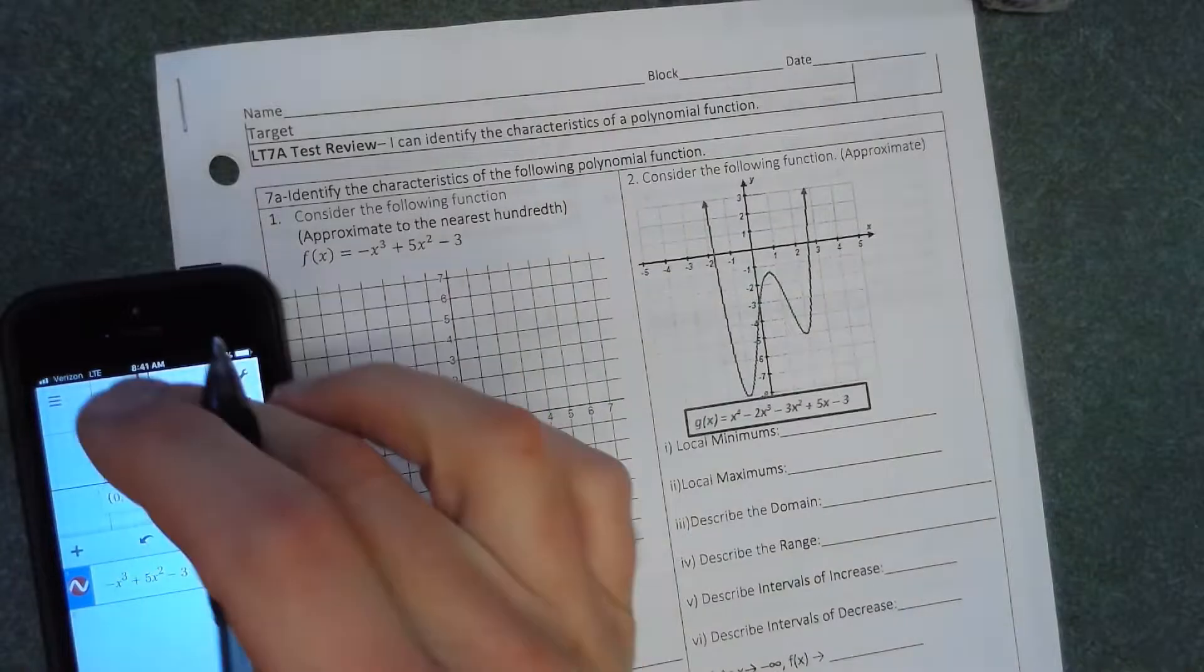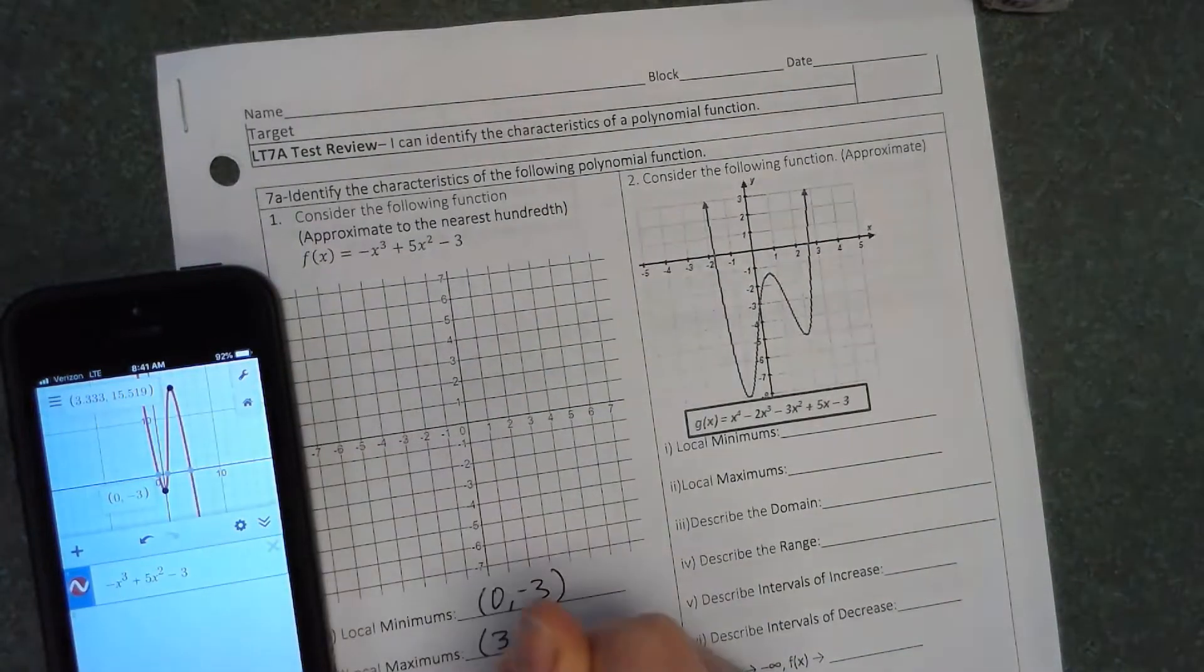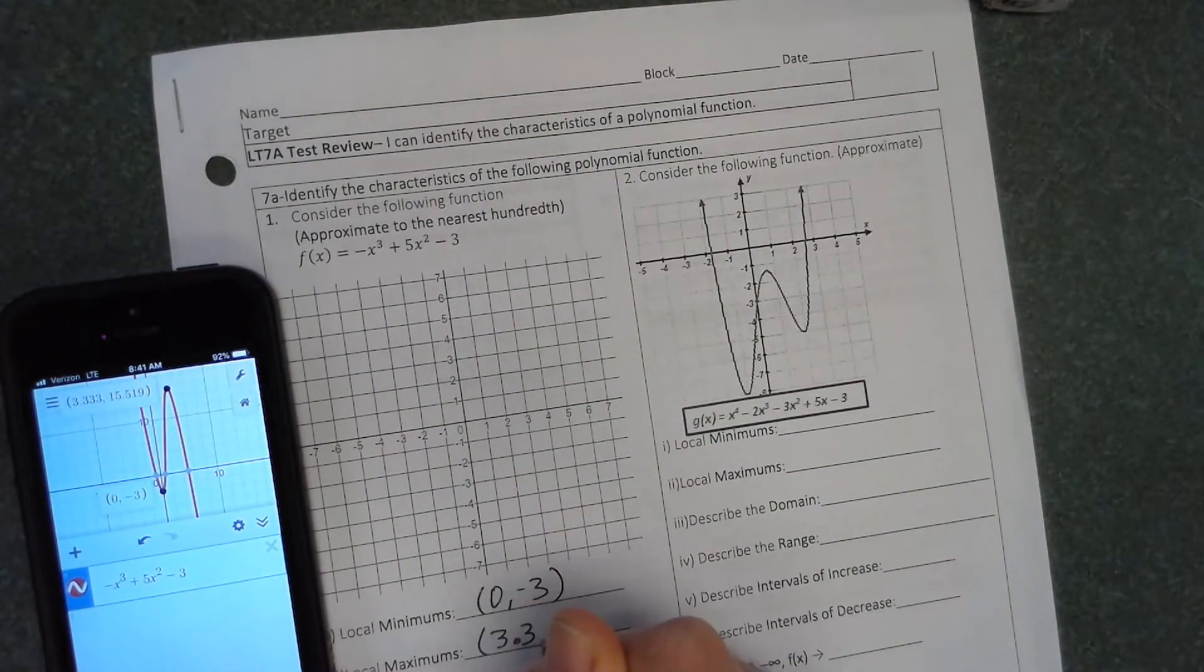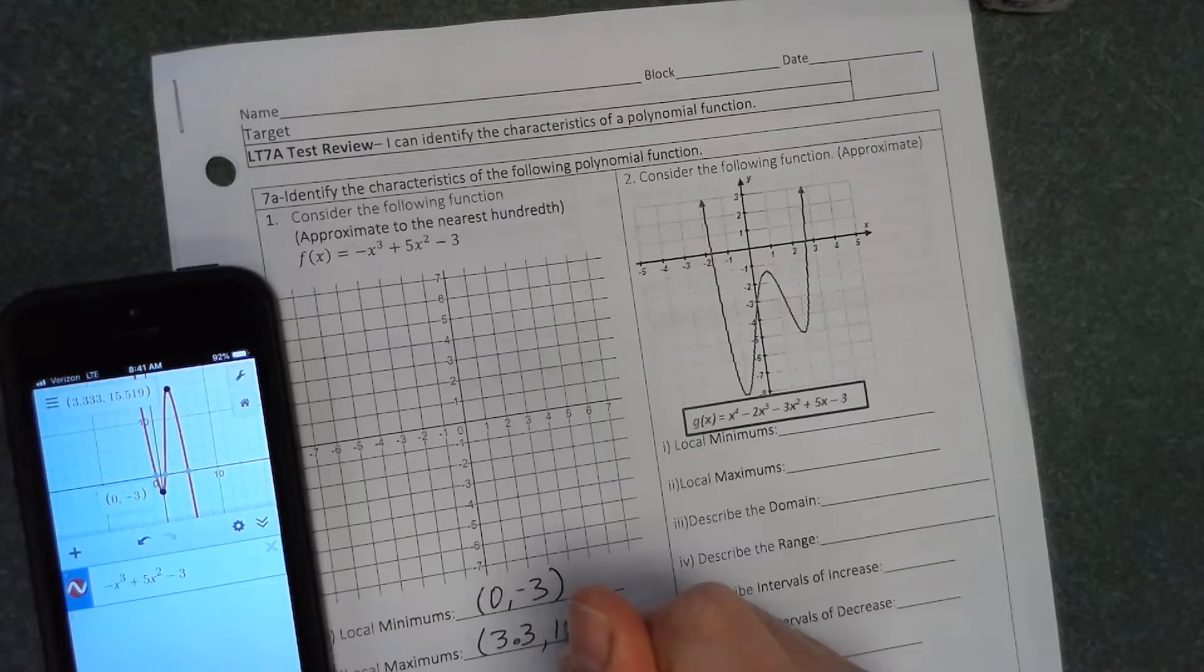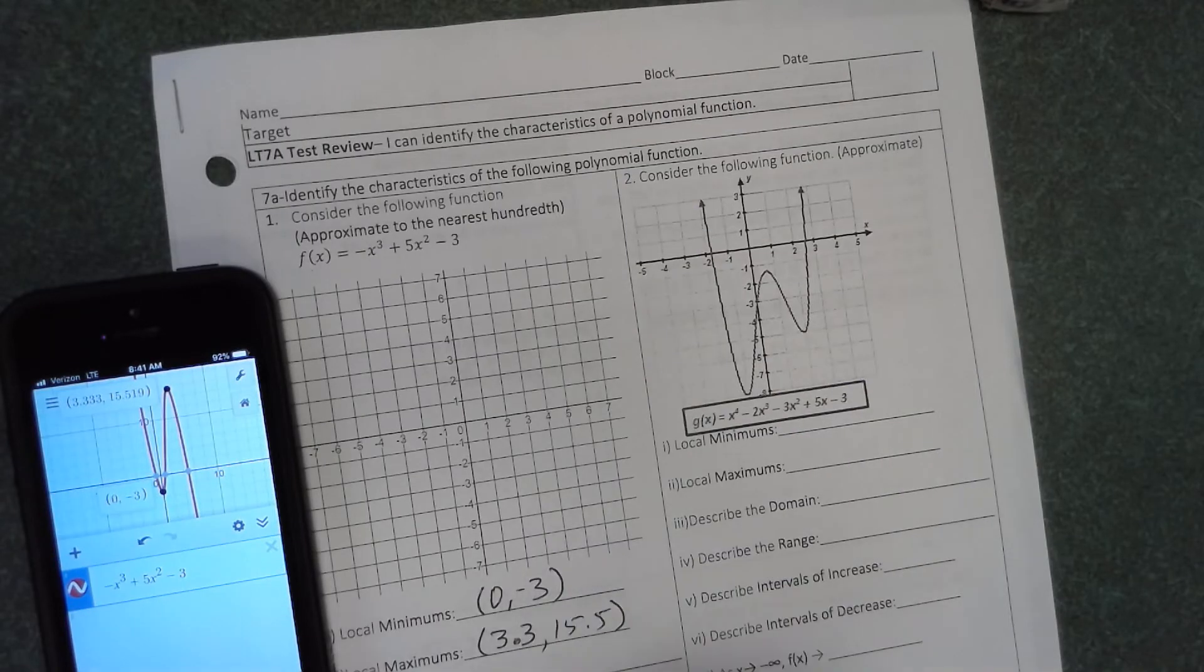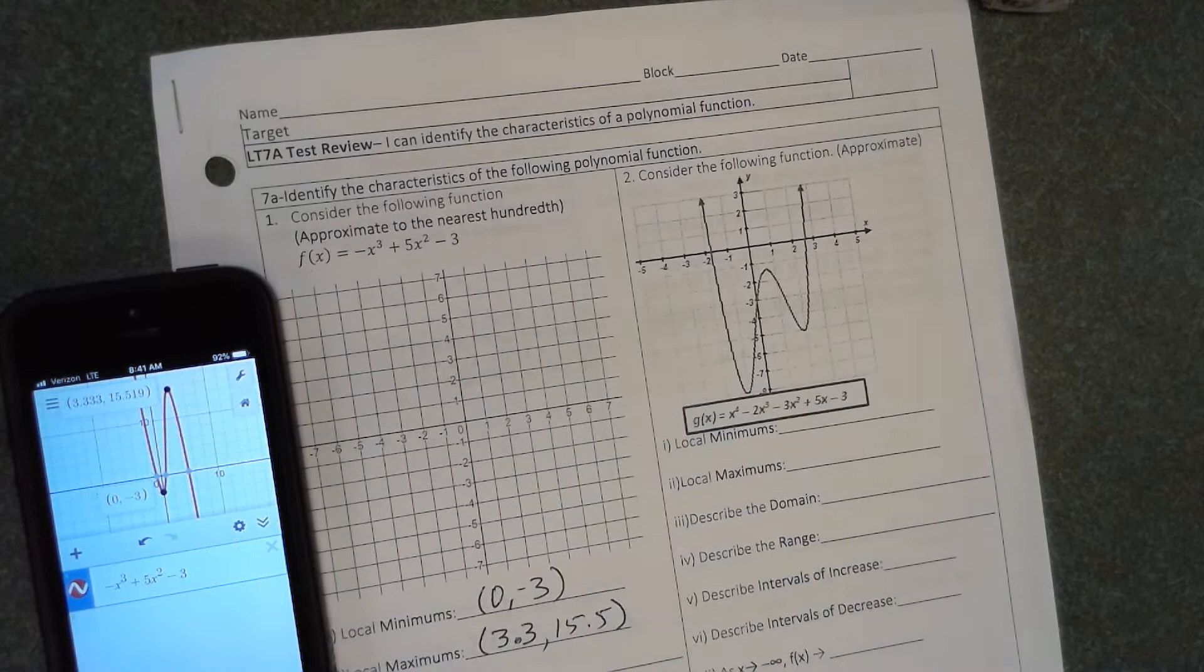Local maximums are not maximums of the graph. The maximum of this graph would be infinity, but there's a local maximum. I would just round to the nearest tenth, so one decimal place to the right of the decimal, at 3.3, 15.5. If you're thinking that's off the graph, we'll estimate it.